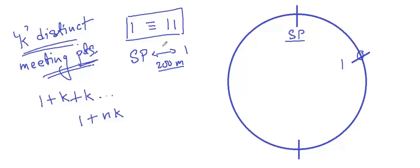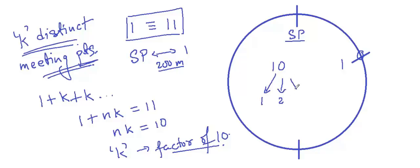As 11 is one of these points, this must be equal to 11, or nk must be equal to 10, or simply put, k must be a factor of 10. Now first let's get into this. What are the factors of 10? The possible factors of 10 are 1, 2, 5, and 10.